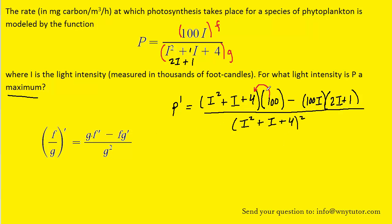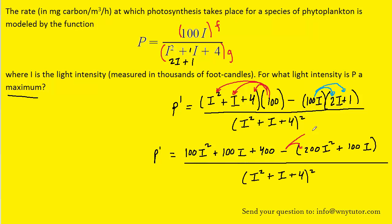Now we can simplify the numerator by distributing the 100 into all three terms of the parentheses. We can also distribute this 100I into the parentheses on the right. Then we need to distribute the minus sign into the parentheses as well. Now in the numerator, we'll notice that we have a positive 100I term as well as a negative 100I term, so those two terms will cancel out.